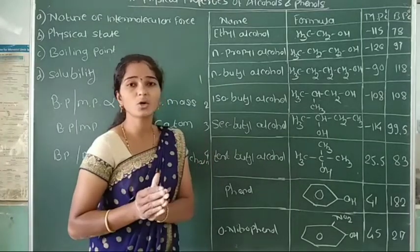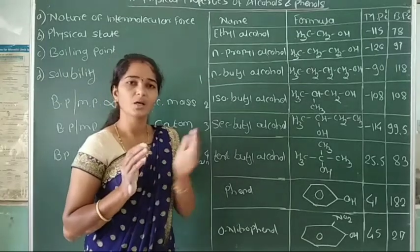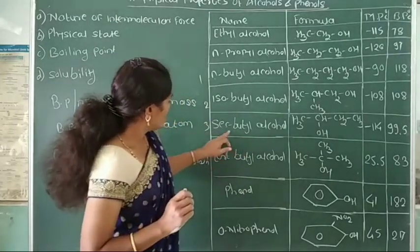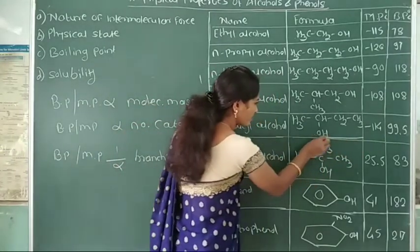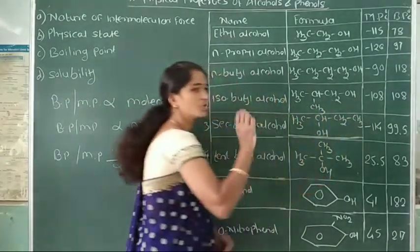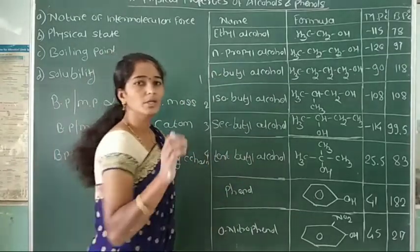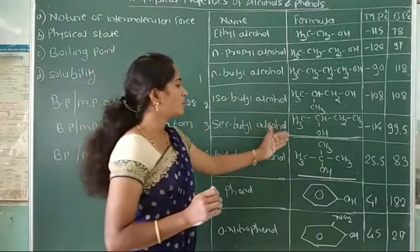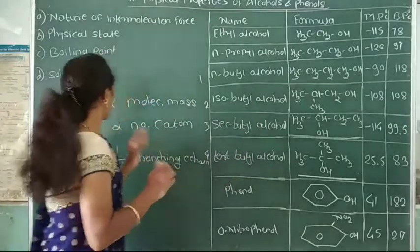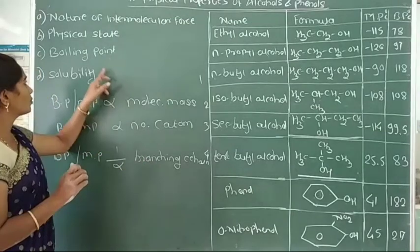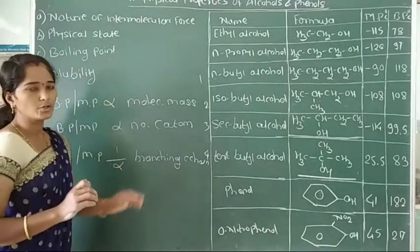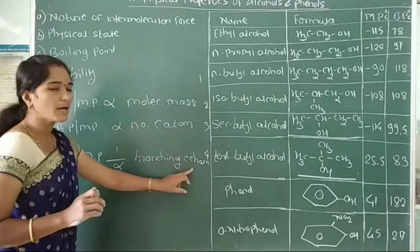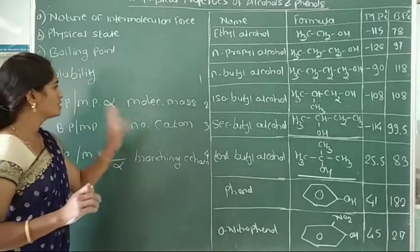Boiling point and melting point decrease due to decreasing surface area. When surface area decreases, melting point and boiling point decrease. In secondary butyl alcohol, the main source is a straight carbon chain, but in tertiary butyl alcohol, the surface area decreases. Therefore, melting point and boiling point decrease. The factors affecting boiling point and melting point of alcohols and phenols are: first, molecular mass; second, number of carbon atoms; third, branching of carbon chain; and fourth, surface area.